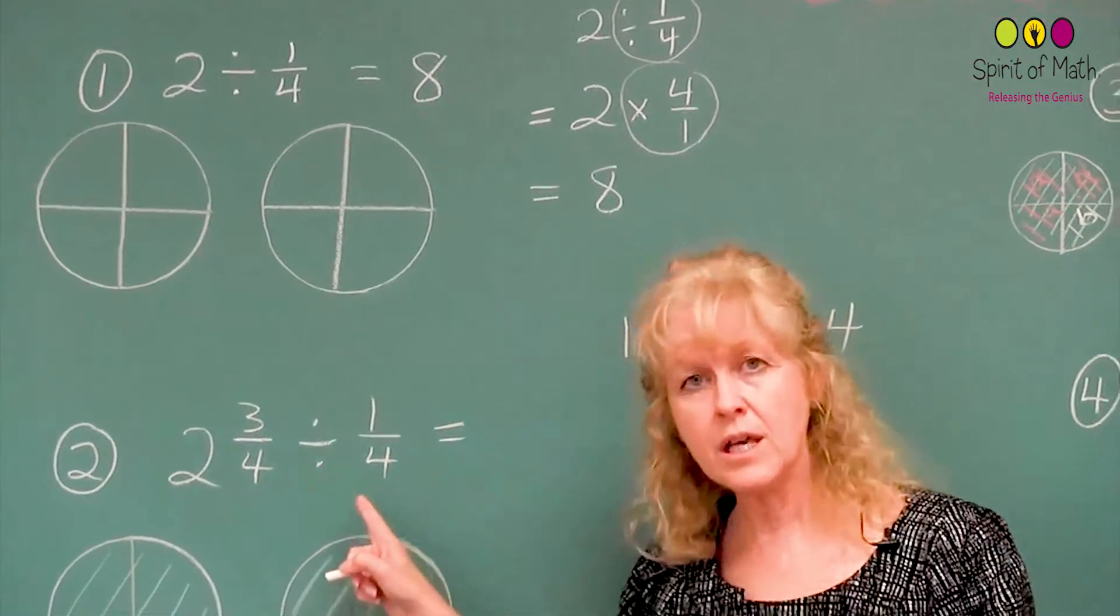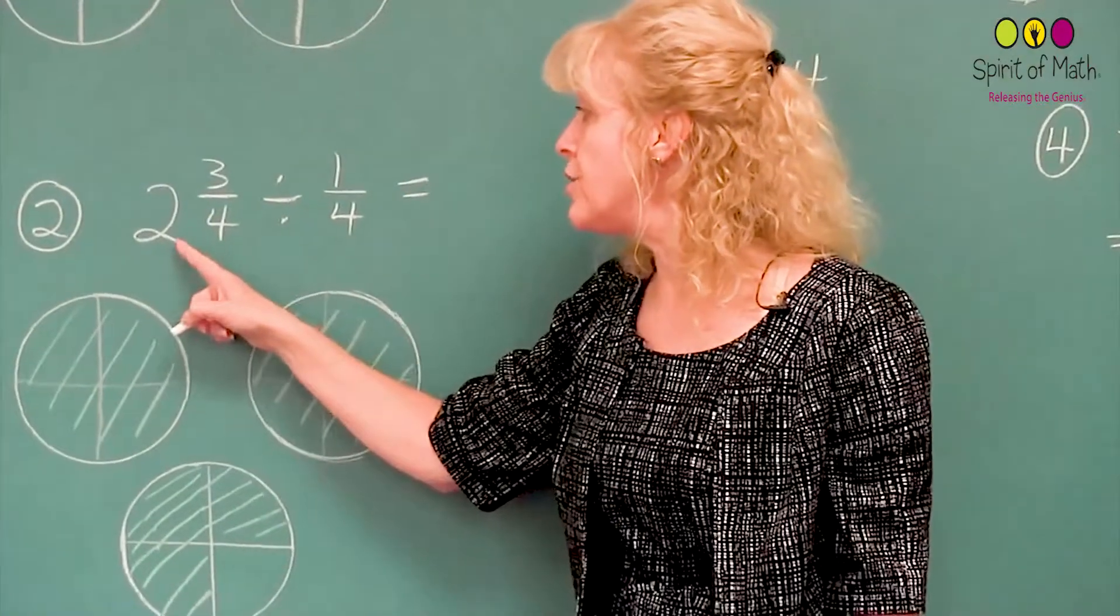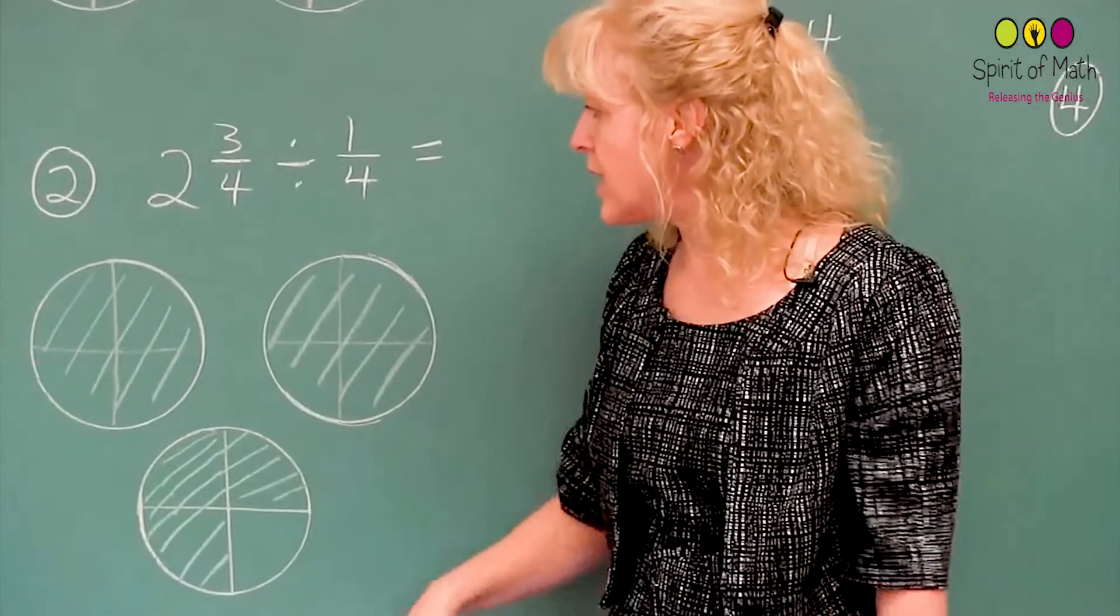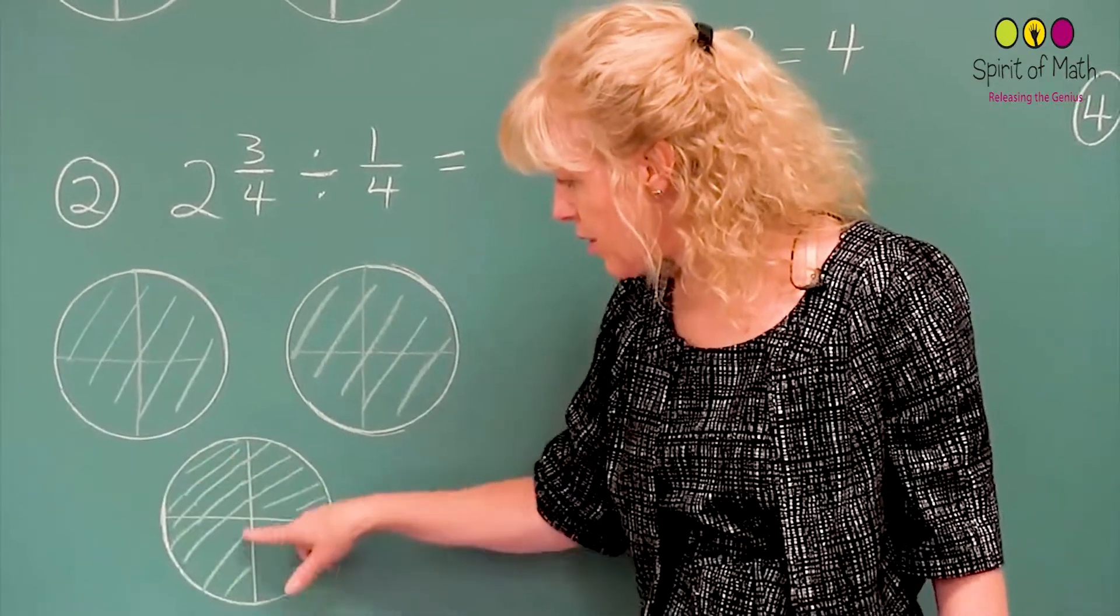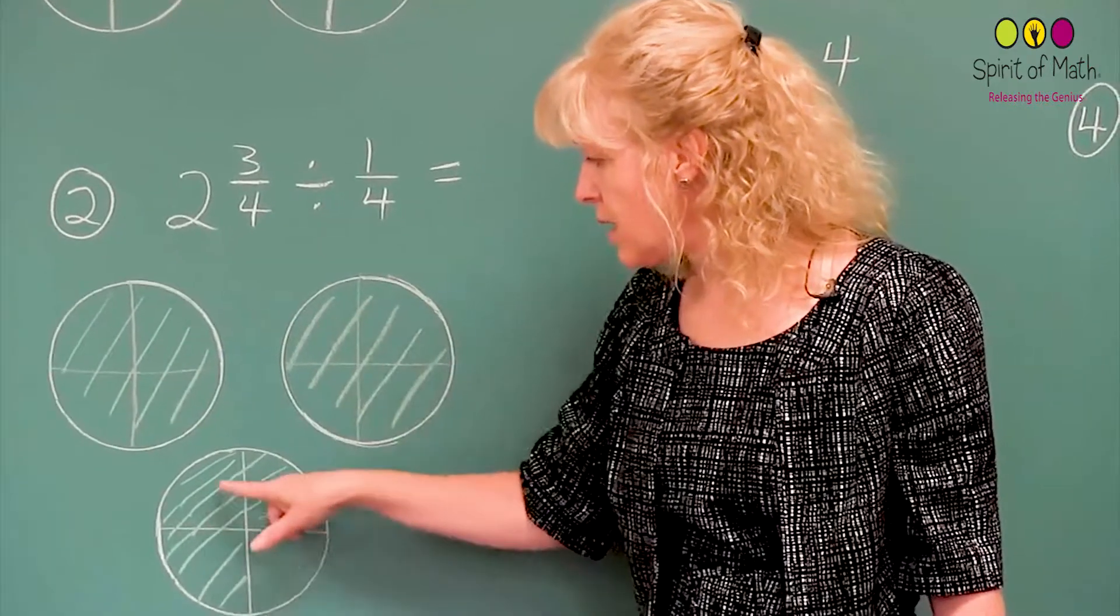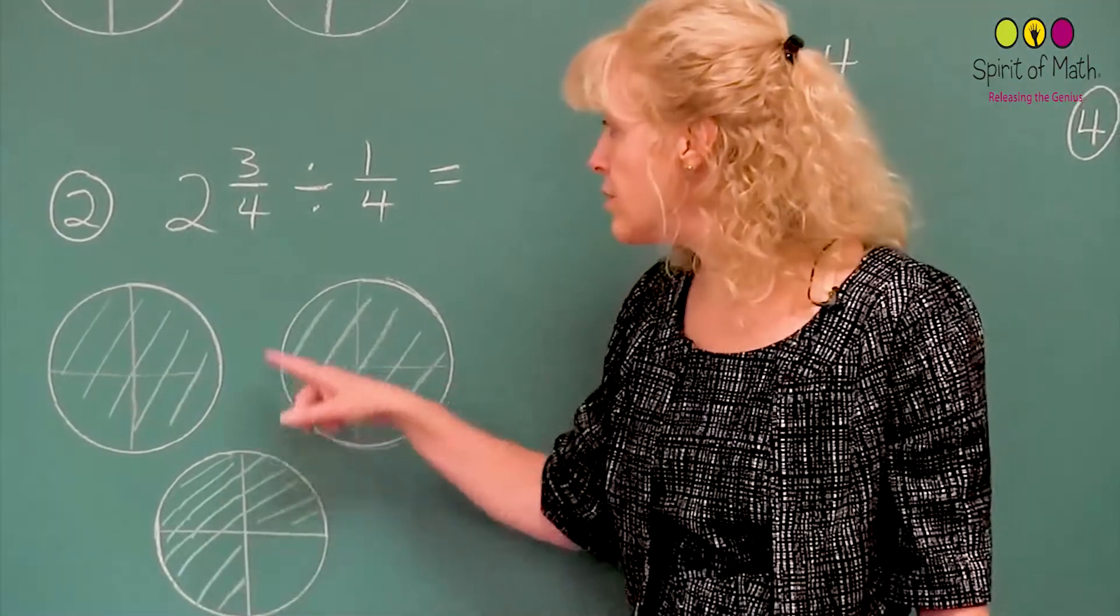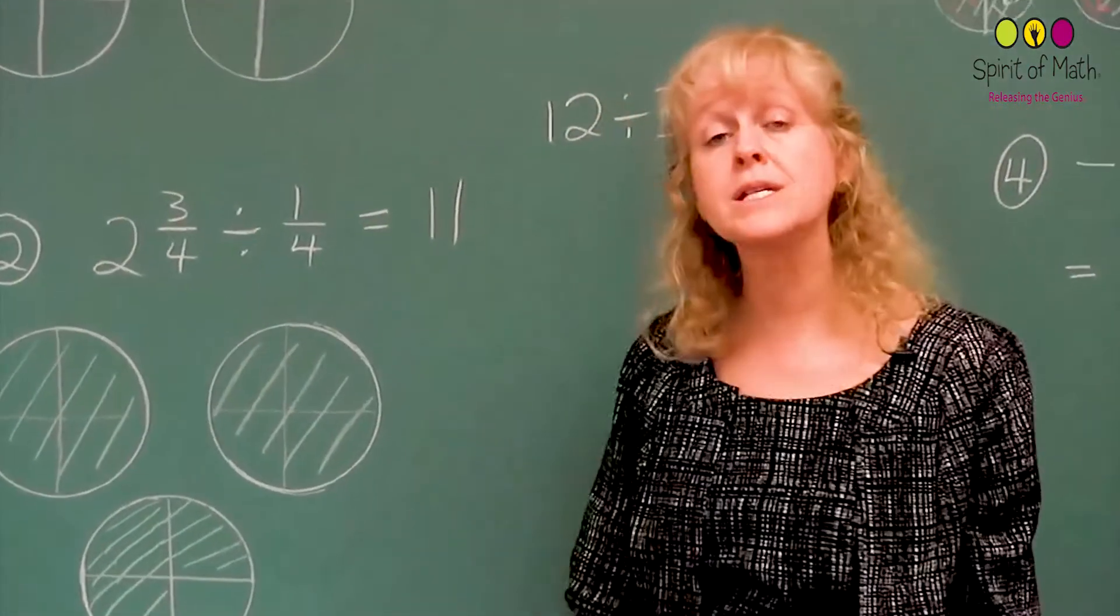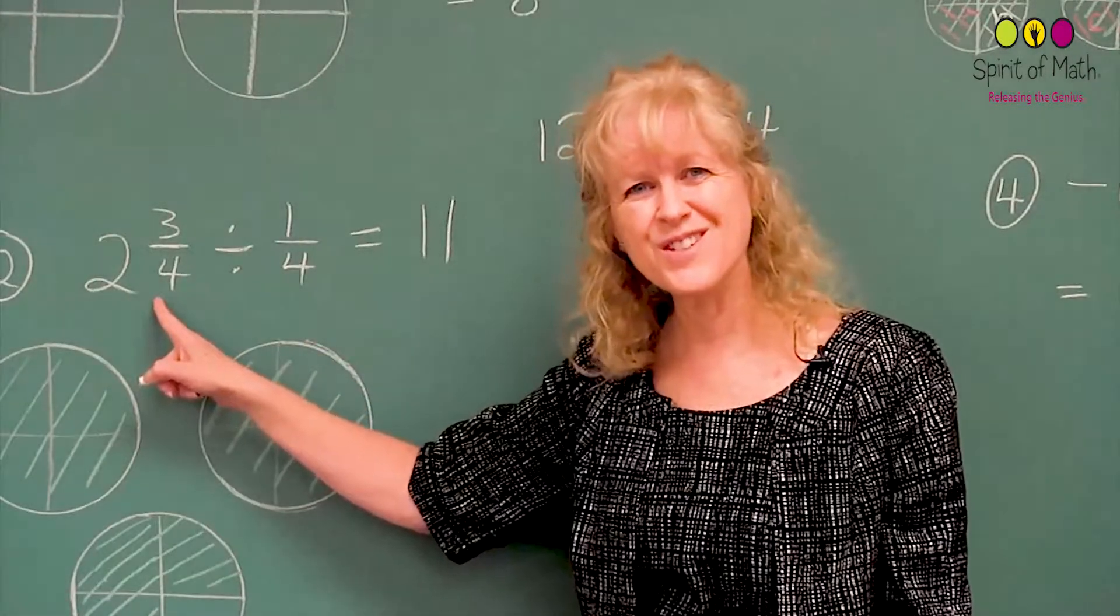Let's look at the same idea here and then look at the algorithm. First of all, now in this case, you've got 2 and 3/4 divided by 1/4, not just 2 divided by 1/4. So 2 and 3/4, again, you've got... I've written it out here. So you've got 2 and then there's a 3/4 here shaded in. So you've got 4 and 4 plus another 3. So 4, 8, 9, 10, 11. You've got 11 quarters will fit into or can be taken out of 2 and 3/4. So your answer is 11. Because 11 quarters can fit into 2 and 3/4.